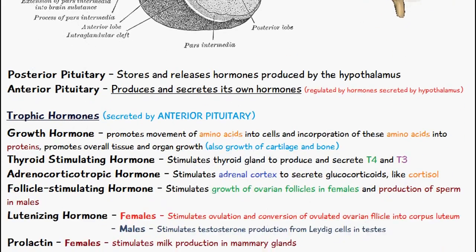Growth hormone promotes the movement of amino acids into cells and the incorporation of these amino acids into proteins. It also promotes overall tissue and organ growth, as well as growth of cartilage and bone.